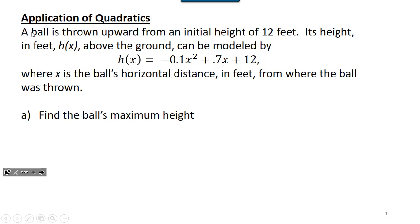This one says a ball is thrown upward from an initial height of 12 feet. Its height in feet h of x — which you know better as y — so that vertical distance is given by that y value, and it can be modeled by h of x equals negative 0.1x squared plus 0.7x plus 12, where x is the ball's horizontal distance.